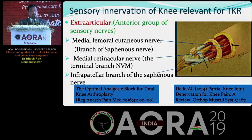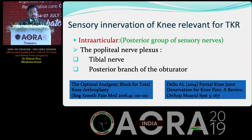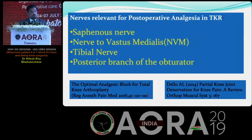The innervations relevant to TKR are divided into the extra-articular or anterior group of sensory nerves — mainly the saphenous nerve and the nerve to vastus medialis — and intra-articular, which is the posterior group of sensory nerves, the popliteal nerve plexus, formed by the tibial nerve and the posterior branch of obturator. So the nerves relevant for post-operative analgesia in TKR are the saphenous nerve, the nerve to vastus medialis, the tibial nerve, and the posterior branch of obturator.